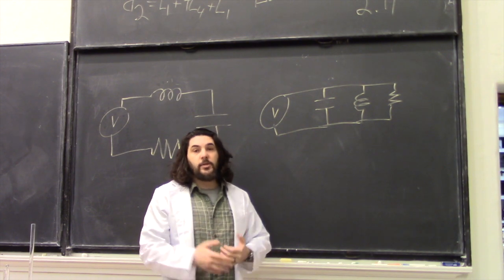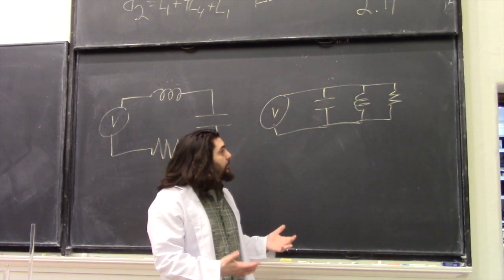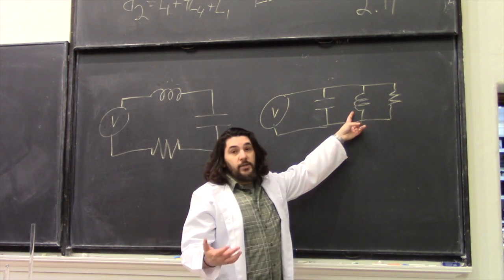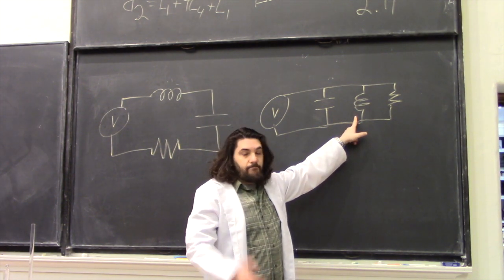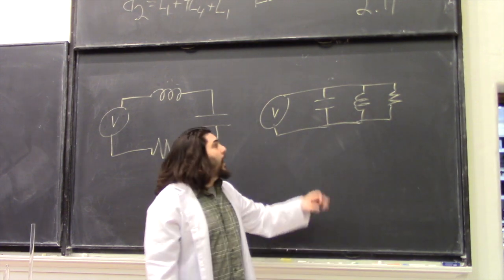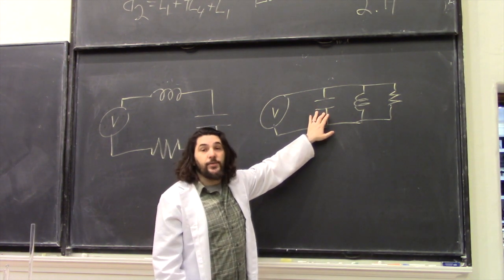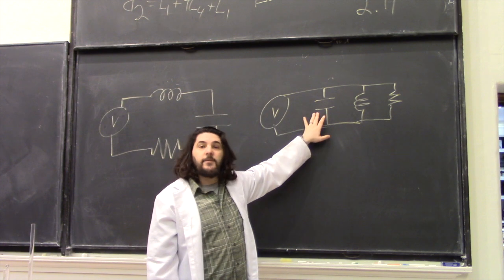And once again, we can do a rudimentary look at low and high frequency. At low frequency, we know an inductor acts like a short circuit. So the inductor here is going to draw infinite current. At high frequency, a capacitor acts like a short circuit. So the capacitor is going to draw infinite current.